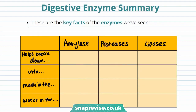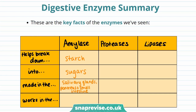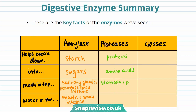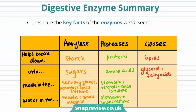Here are the key facts for the digestive enzymes. Amylase breaks down starch into sugars; it is made in the salivary gland, the pancreas, and the small intestine, and works in the mouth and the small intestine. Proteases break down proteins into amino acids; they are made in the stomach, the small intestine, and the pancreas, and work in the stomach and small intestine. Lipases break down lipids into glycerol and fatty acids; they are made in the small intestine and pancreas, and work in the small intestine.